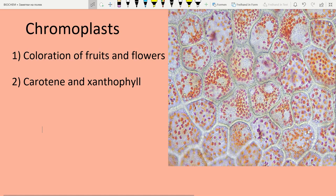They perform their function due to these two pigments: xanthophyll and keratin. So their function is coloration of fruits and flowers, their pigments are xanthophyll and keratin, and they are found in flowers and fruits.